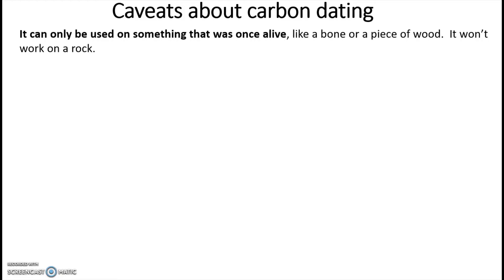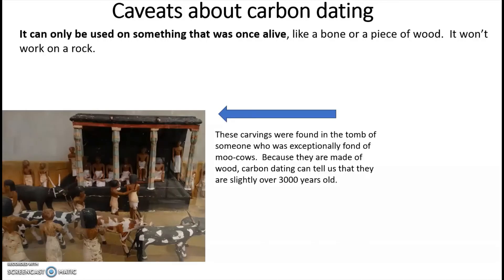A couple of caveats. First, carbon dating can only be used on something that was once alive — like a piece of wood — it won't work on a rock. For example, some carvings found in a tomb of someone apparently fond of cows: even though written records exist from that time, carbon dating tells us the trees that produced the wood for those carvings died around 3,000 years ago, which can be corroborated with written records.